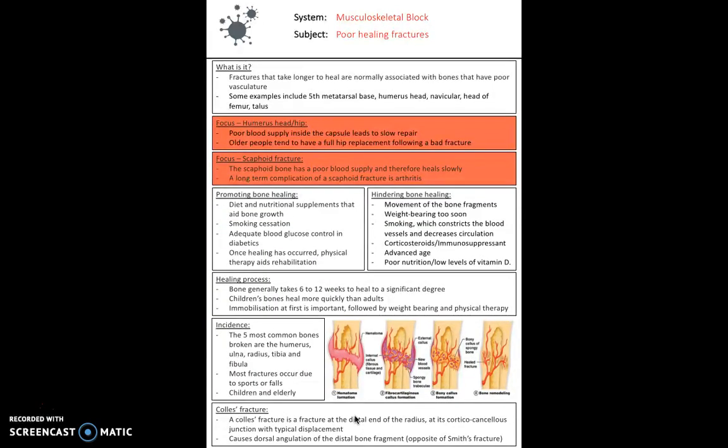Poor healing fractures are fractures where the bones have poor vasculature, poor blood supply. Examples include the fifth metatarsal base, the humerus head, the navicular bone, the head of the femur and the talus. If we zoom in on two of those, the head of the humerus has poor blood supply. This is exactly the same at the hip. As a result of poor blood supply, older people tend to have a full hip replacement if they fracture here badly, because the vasculature is so poor it takes a long time to recover.